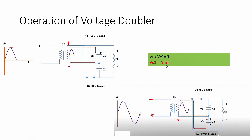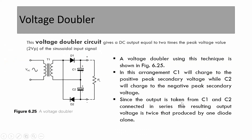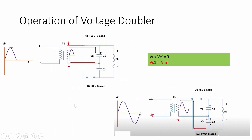During the negative half cycle, the polarity reverses: minus at top and plus at bottom of the secondary winding. Checking the main circuit, the minus is connected to the anode of D2, so D2 is forward biased and D1 is reverse biased — D1 is off and D2 is on. Current flows through capacitor C2 and back to the secondary winding, forming a closed loop. Capacitor C1 remains charged to Vm with no discharge path.